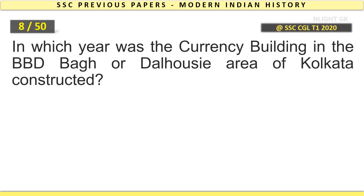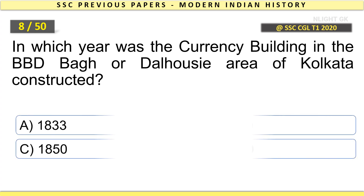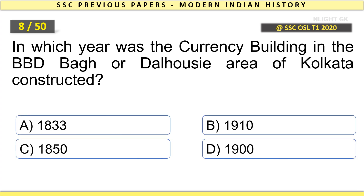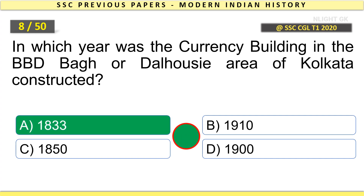In which year was the currency building in the BBD Baag or Dalhousie area of Kolkata constructed? 1833.